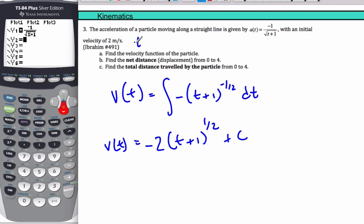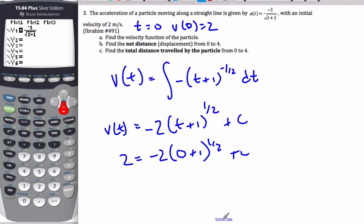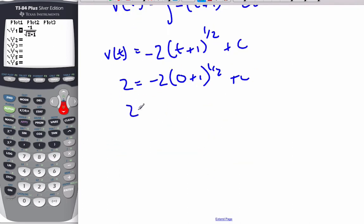But I know my initial velocity, t equals zero, I get v at zero will be two. So if I plug that in, two is going to be negative two, zero plus one, plus c. And so I have two is equal to, well, that's one times negative two, negative two plus c, c is equal to four.